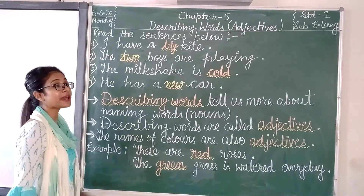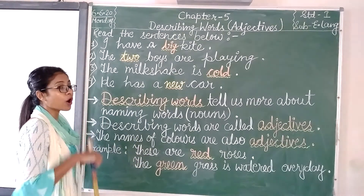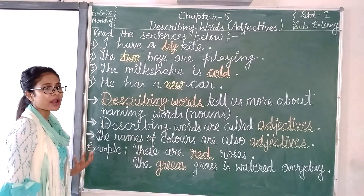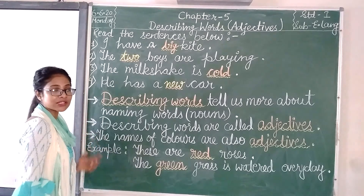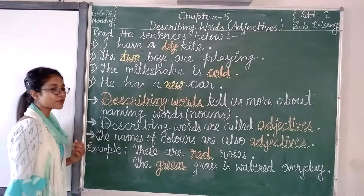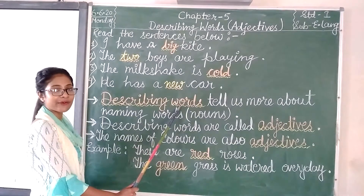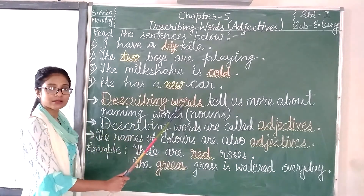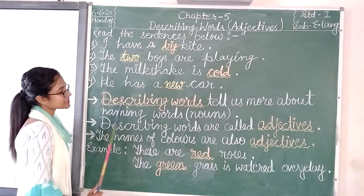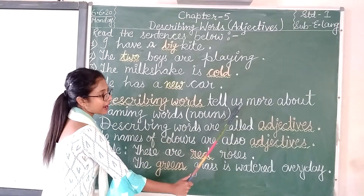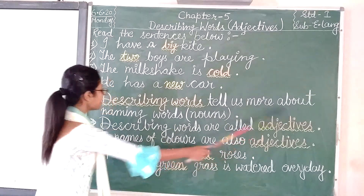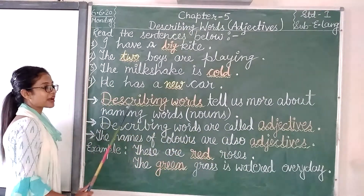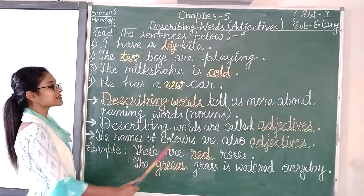Students, 'describing' means telling more about something — giving details, telling its qualities, good or bad: tall, small, black, white, ugly, beautiful. Those are describing words. So, describing words tell us more about naming words and nouns.